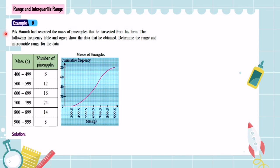To note further, let us look at example 9. Pat Hamidi has recorded the mass of pineapples that he harvested from his farm. The following frequency table and ogive show the data that he obtained. Determine the range and interquartile range for the data.